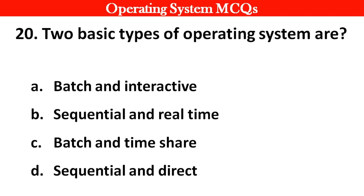Next question: Two basic types of operating systems are: Options: A. Batch and interactive. B. Sequential and real-time. C. Batch and timesharing. D. Sequential and direct. Right answer is option A: Batch and interactive.